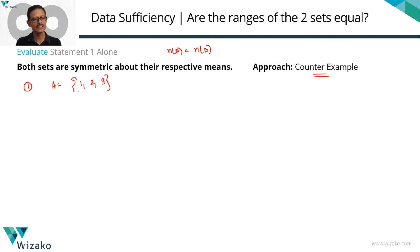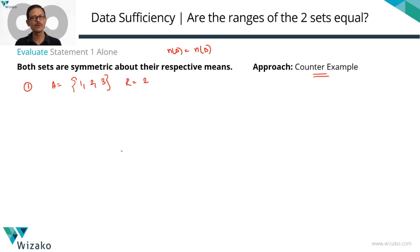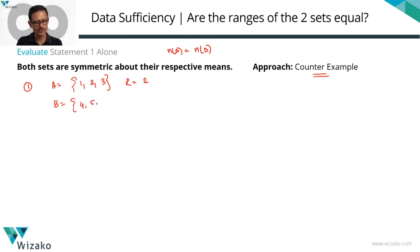There are three elements in A. The range of this set equals 3 minus 1, which equals 2. If you pick a set where the elements are in an arithmetic progression, they will definitely be symmetric about the mean.